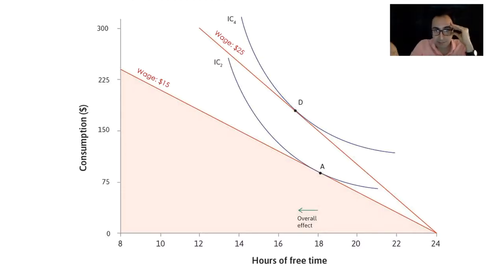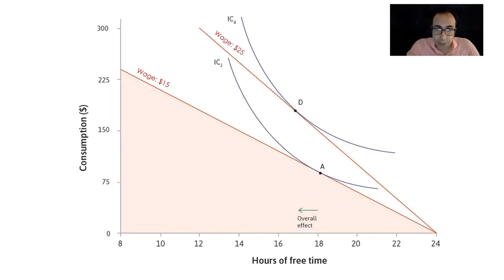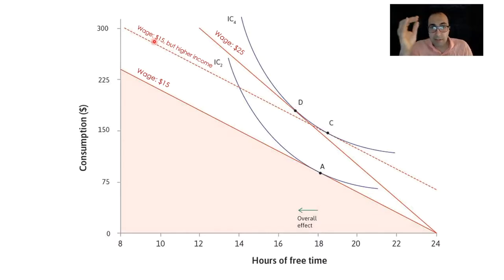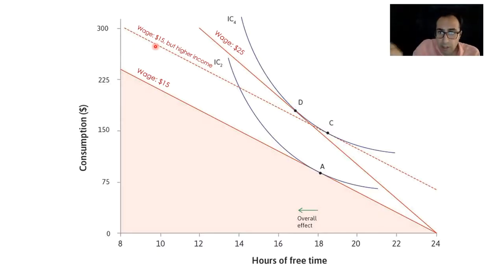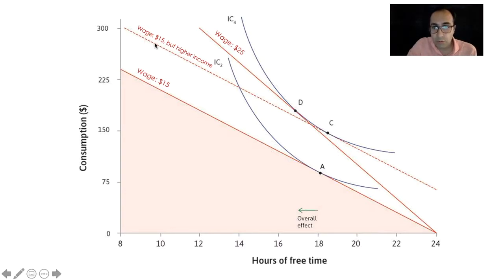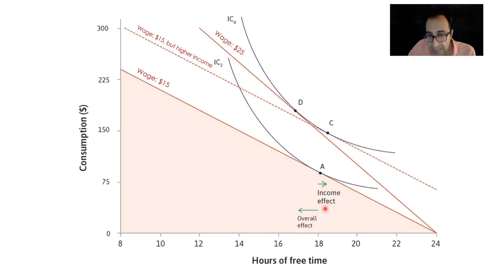Let's visualize each of these effects, starting with the income effect. For the income effect, we ask a hypothetical question: suppose Sarah became rich because a friend gave her some money, so her income increased but her wages remained the same. In other words, she became richer but the opportunity cost of her time stayed the same. In this case, she would decide to go from point A to point C, meaning she would work less and increase her hours of free time. This is the income effect.